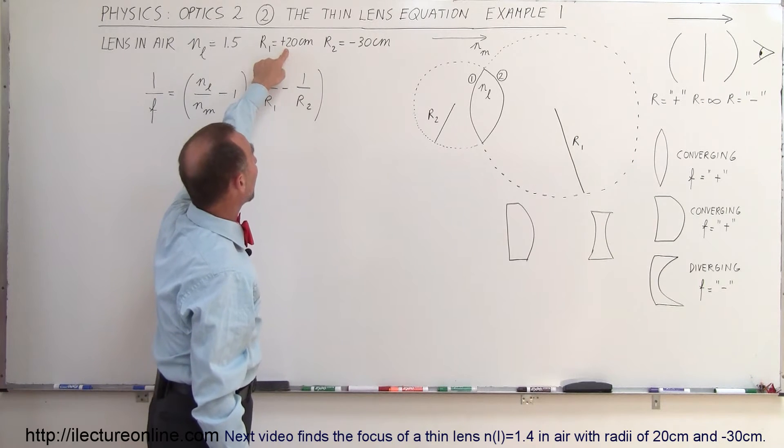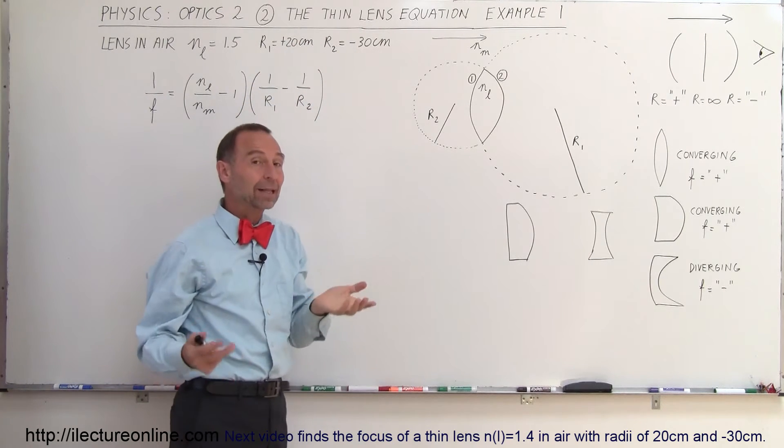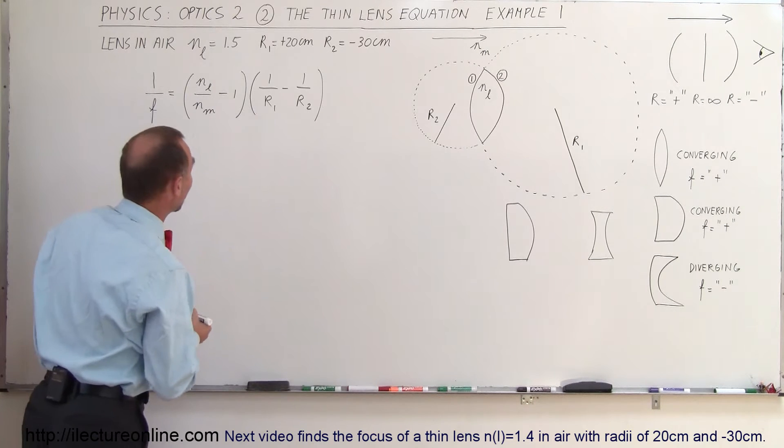So that means that if the front is positive and the back is negative, that automatically will make this a converging lens. Let's see if this comes out that way.